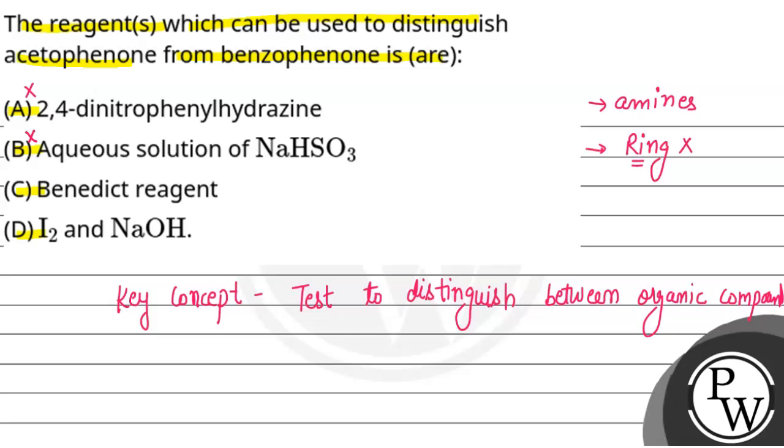Next, our C option is Benedict reagent. This test is used to reduce sugar, meaning carbohydrates. But if we have ketone groups present, so option C is incorrect.